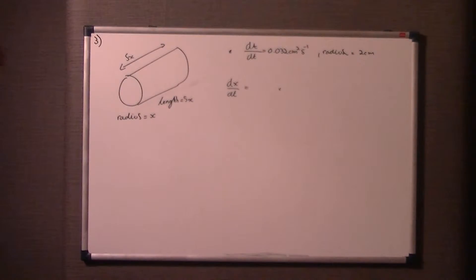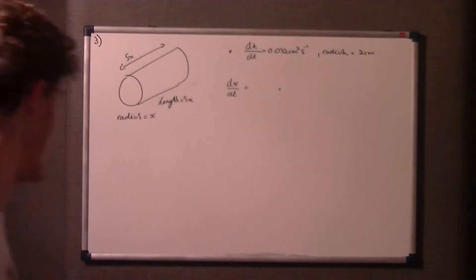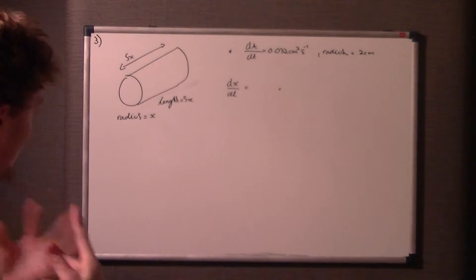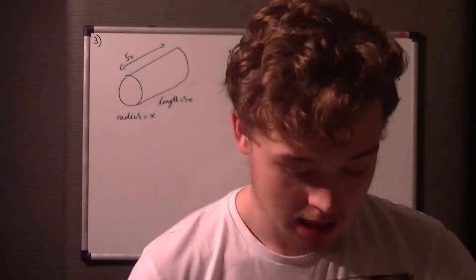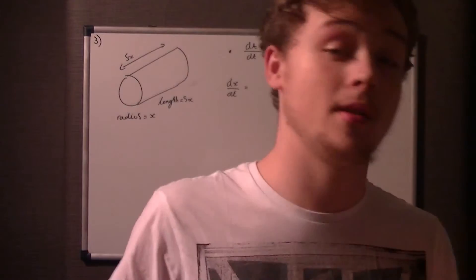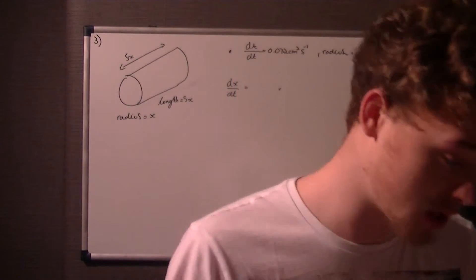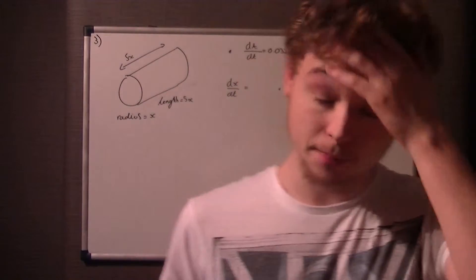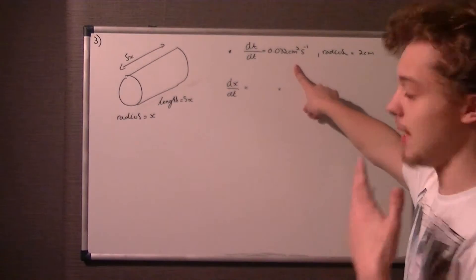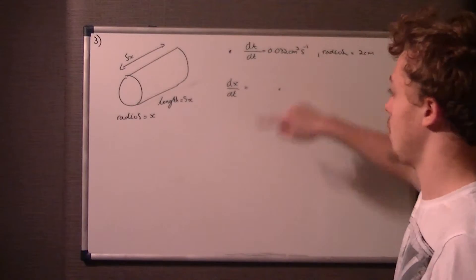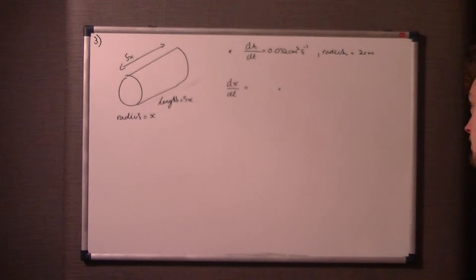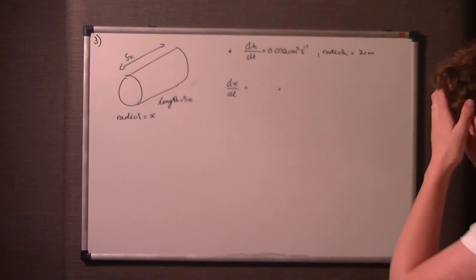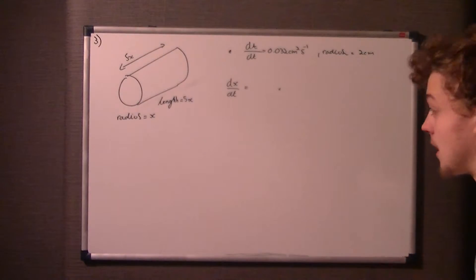We're given this cylinder here with length 5x and radius x. We're told the area is increasing at a rate. Whenever you see area increasing at a rate, or something is at a rate, it's a change over a period of time. We're told the radius is 2 centimeters at a given point, and we're asked to find the rate of change of x, or dx/dt.